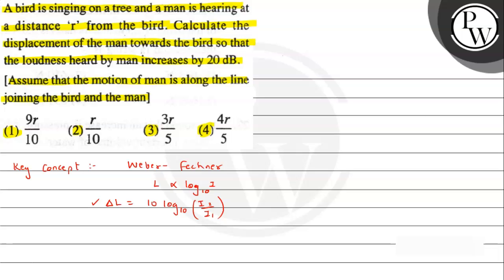We also need to understand how intensity is defined. Intensity is nothing but power per unit area. Whenever an object produces sound, the sound travels in every direction, covering a spherical area. So intensity I equals P divided by 4πr², where r is the radius of the spherical surface.